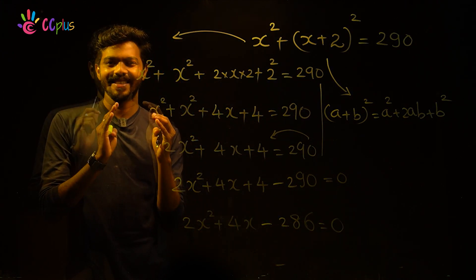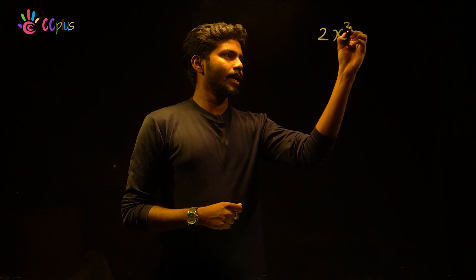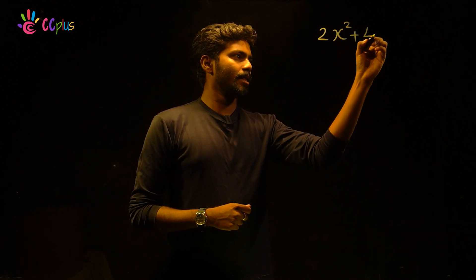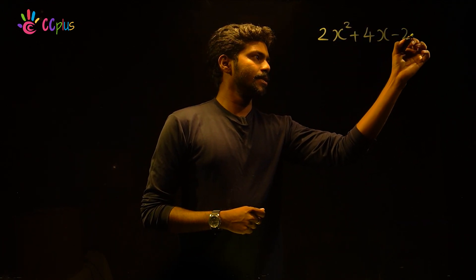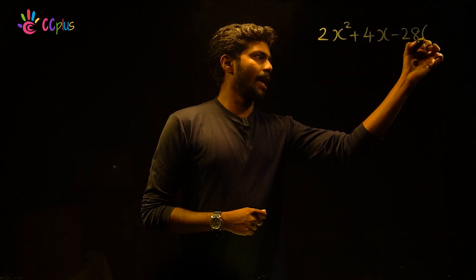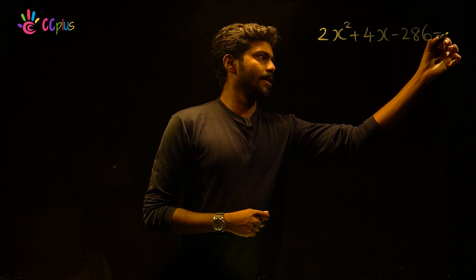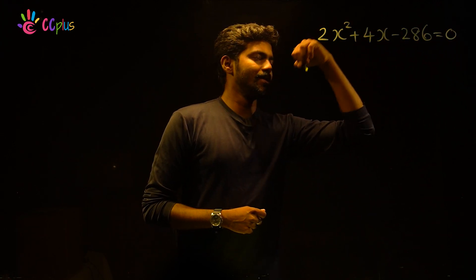So we get a quadratic equation: 2x squared plus 4x minus 286 equals 0.